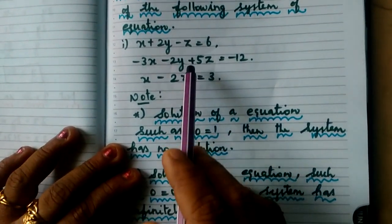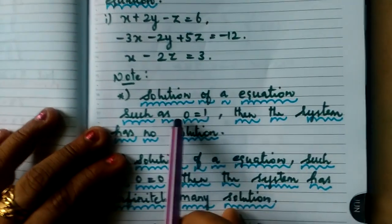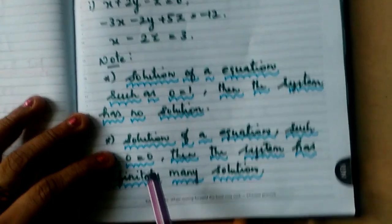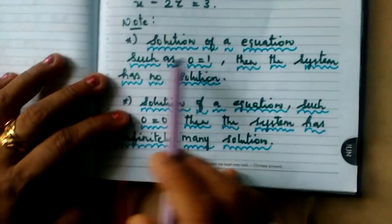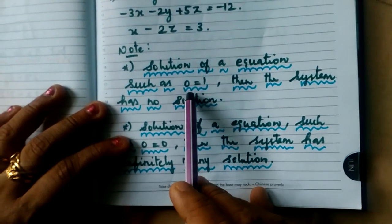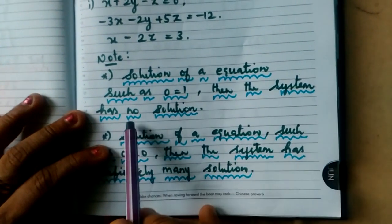So before going to solve this equation, you must have understood one thing. That's what I have given the word note. What kind of note I have given here, just to check out: Solution of the equation such as 0 equal to 1. If you are getting the solution 0 is equal to 1, so the system has no solution.